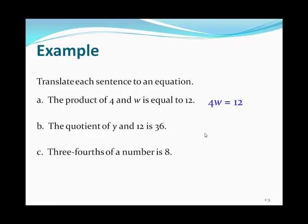Next problem: the quotient of y and 12 is 36. The quotient is a division problem, so y divided by 12 equals 36. And 3 fourths of a number is 8 — when we have a fraction, '3 fourths of' automatically becomes multiplication, so 3 fourths times a number equals 8.